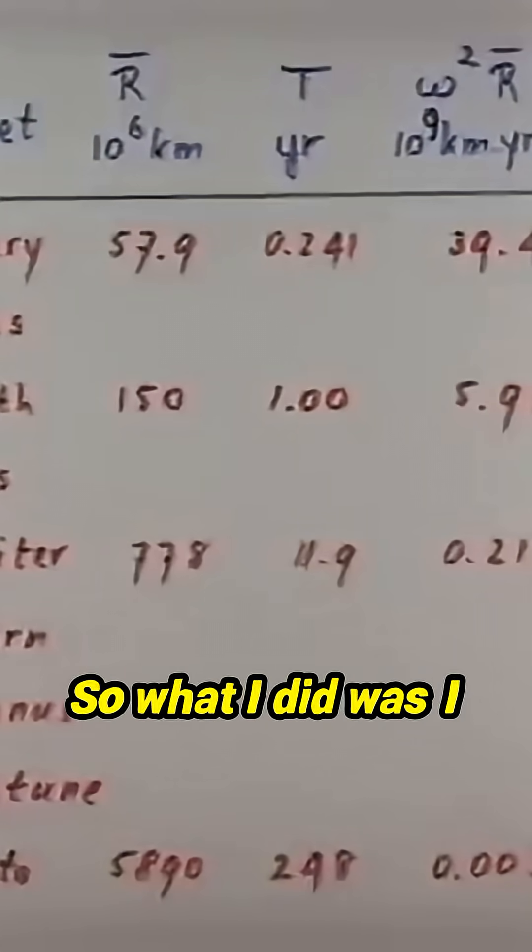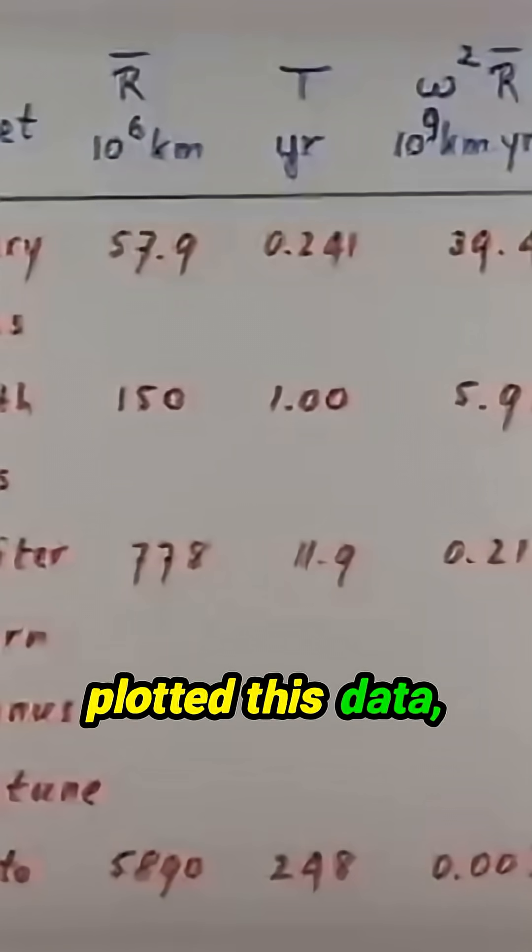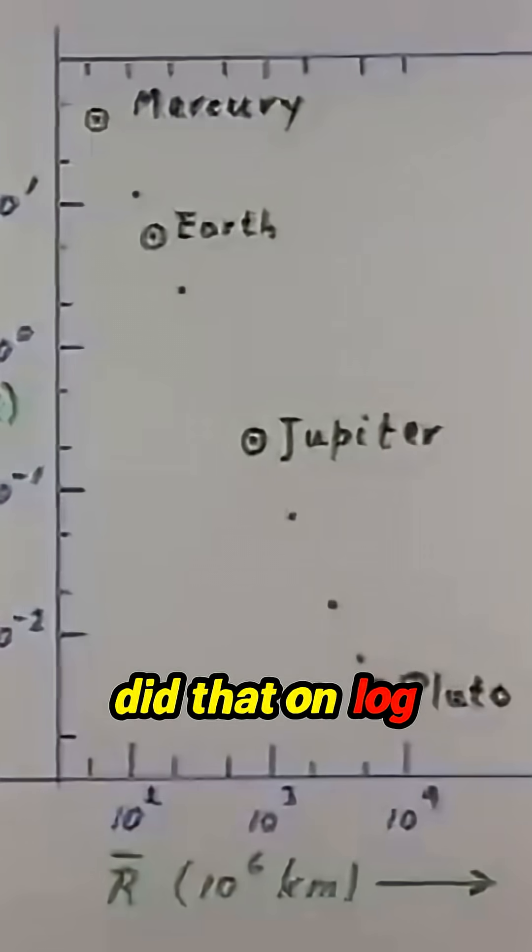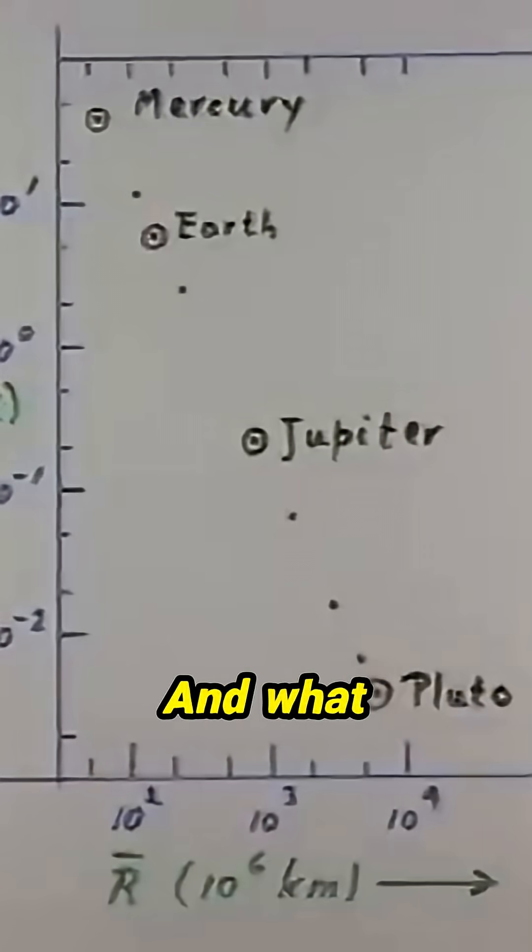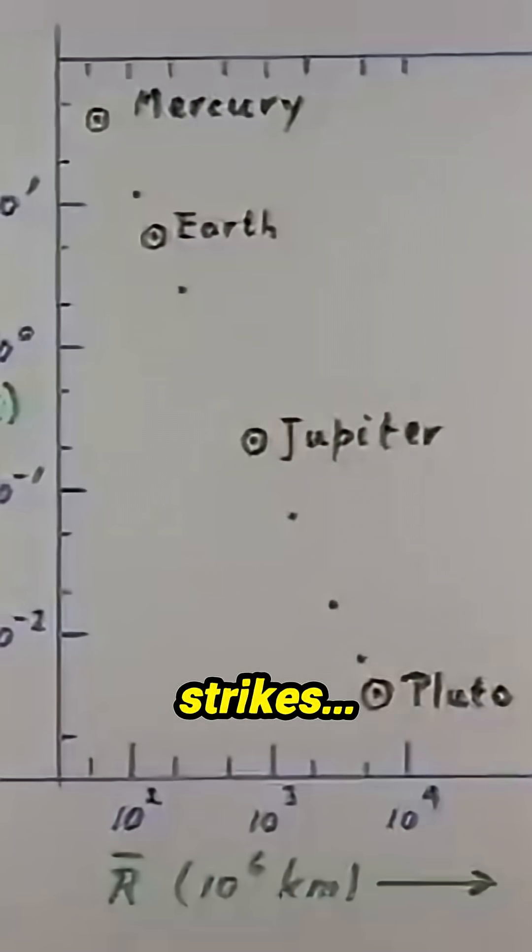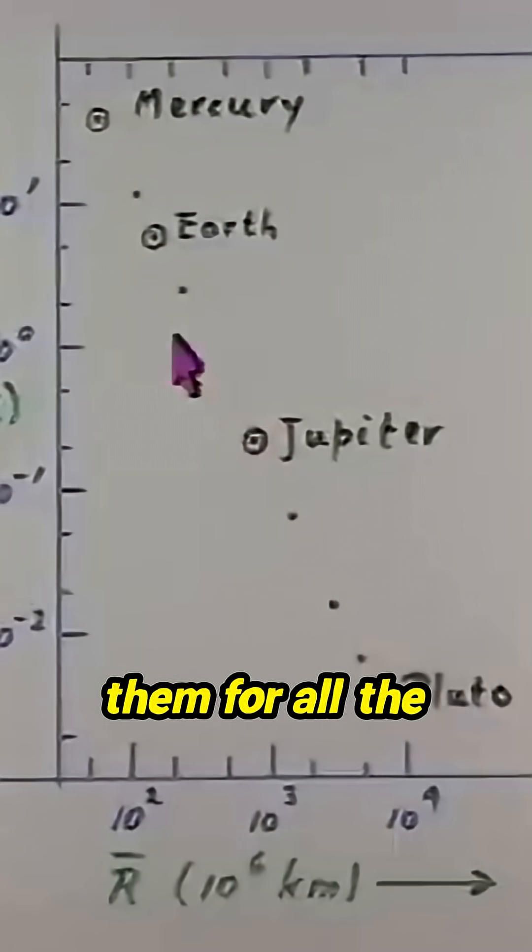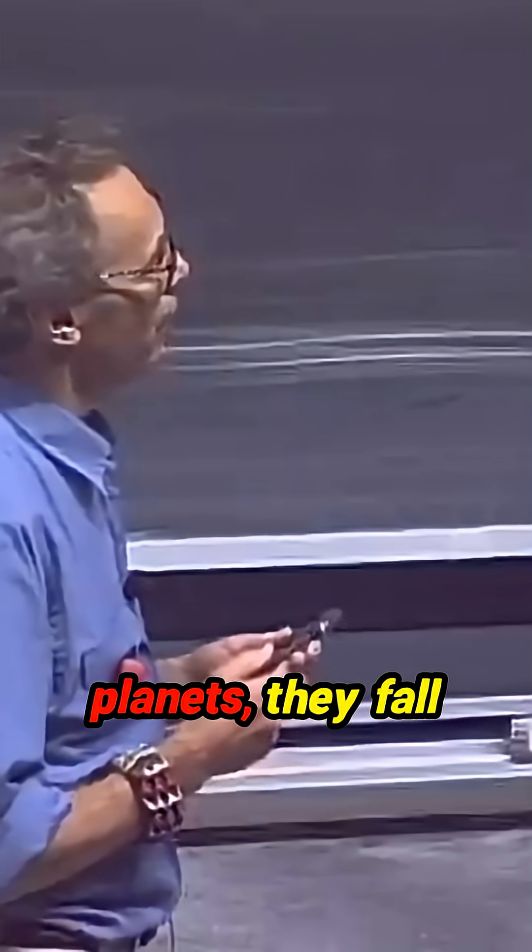So what I did was I plotted this data, the centripetal acceleration versus the mean distance to the Sun, on log-log paper. What is very striking is that all these points, for all the planets, fall on a straight line.